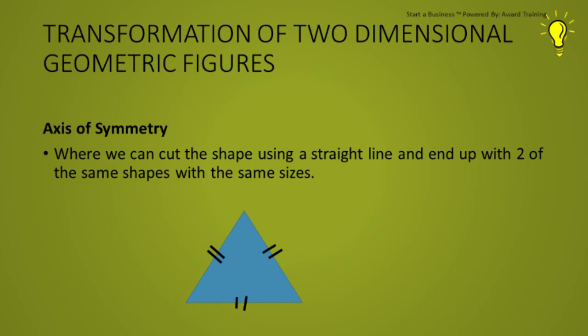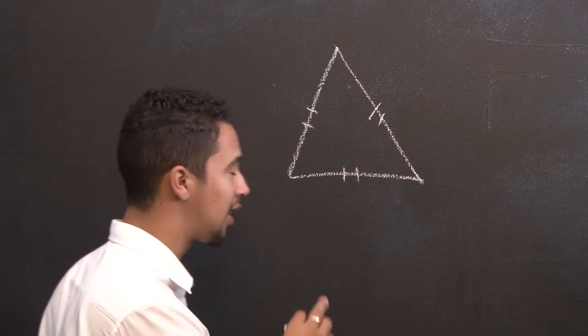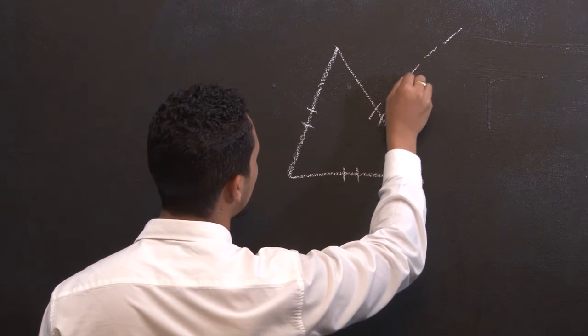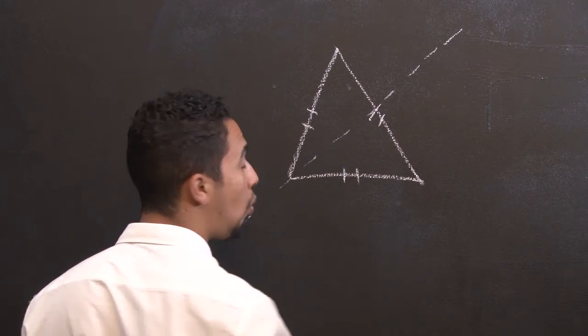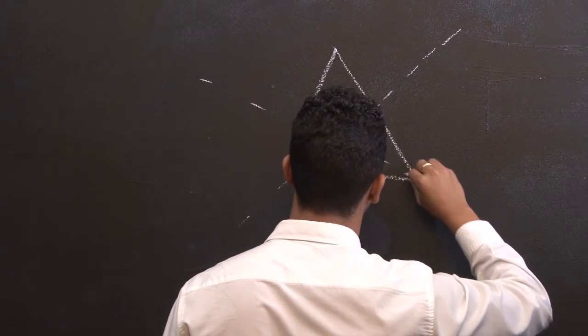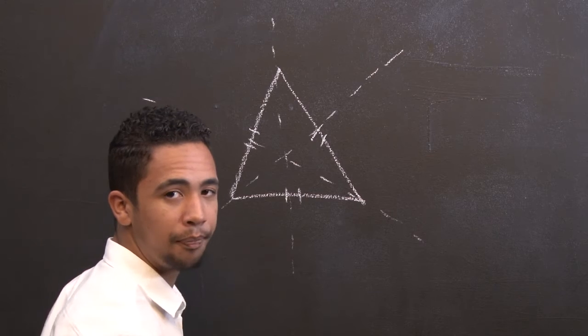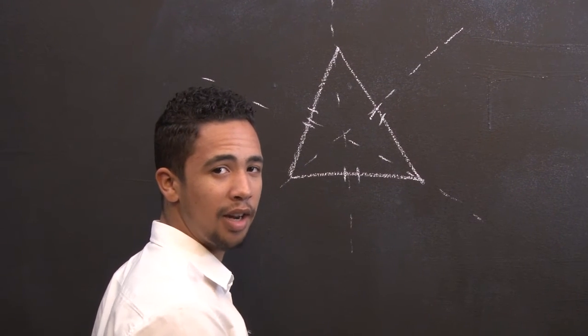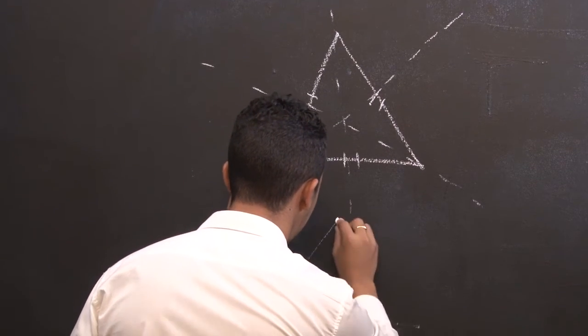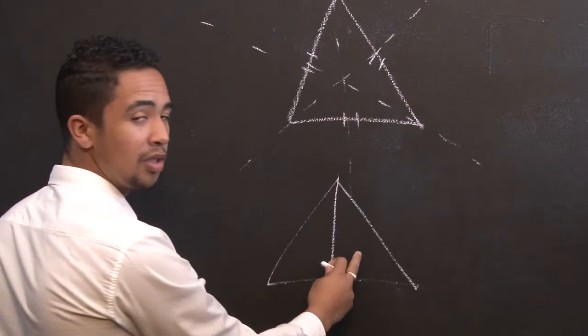Now we have the topic, transformation of two-dimensional geometric figures. Let's define axis of symmetry, which is also found in the learner guide. The definition of the axis of symmetry is where we can cut the shape using a straight line and end up with two of the same shapes with the same sizes. Let's see how many axes of symmetry there are for this isosceles triangle. One, two, three. So there are three ways of folding this isosceles triangle and still ending up with two parts that are the same size.